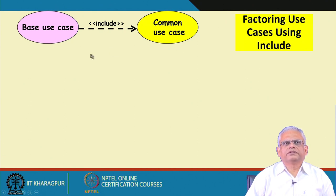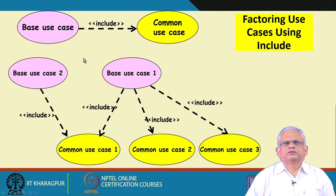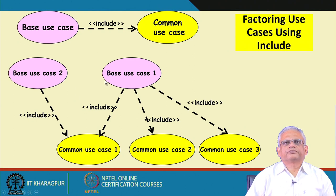This is the base use case, and this is the common use case that can be included in more than one base use case. This is the behavior that we have factored out from the base use case, and this behavior may get included in many use cases, achieving reusability. In the diagram, there are two base use cases and factored use cases — each base use case includes the common use case.